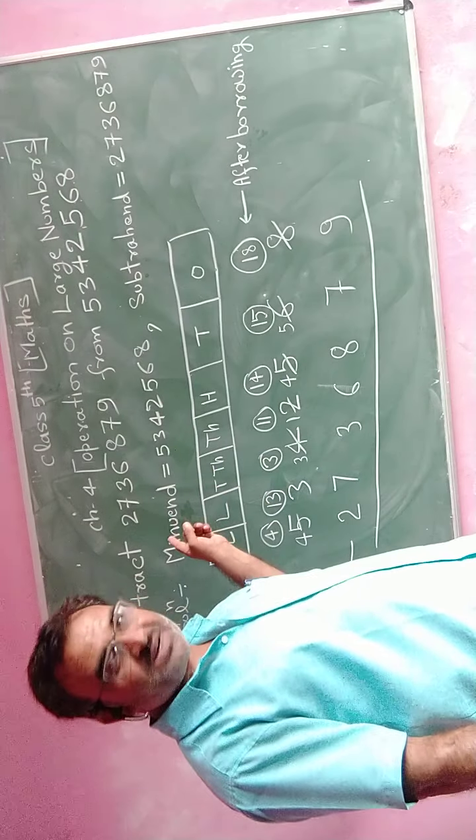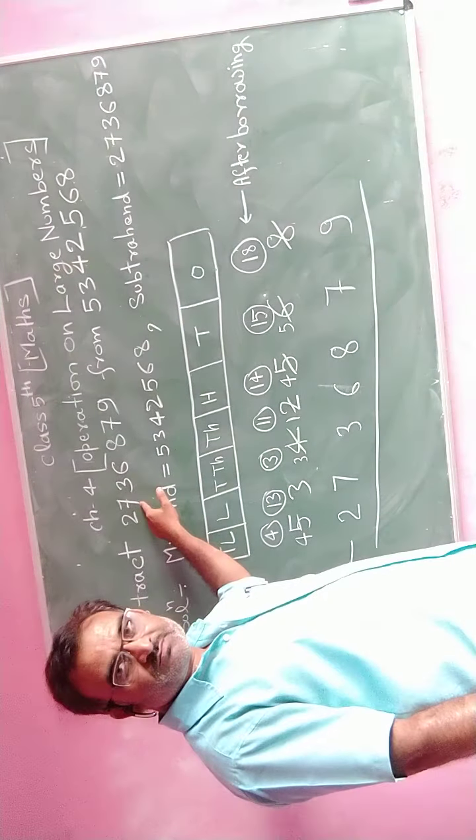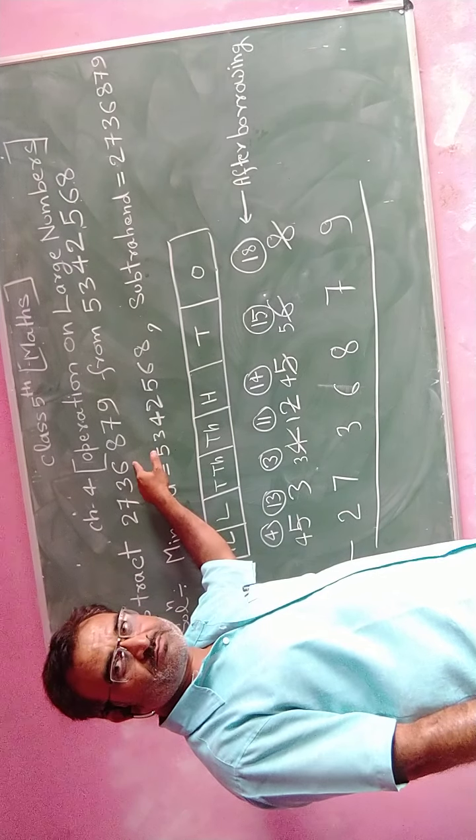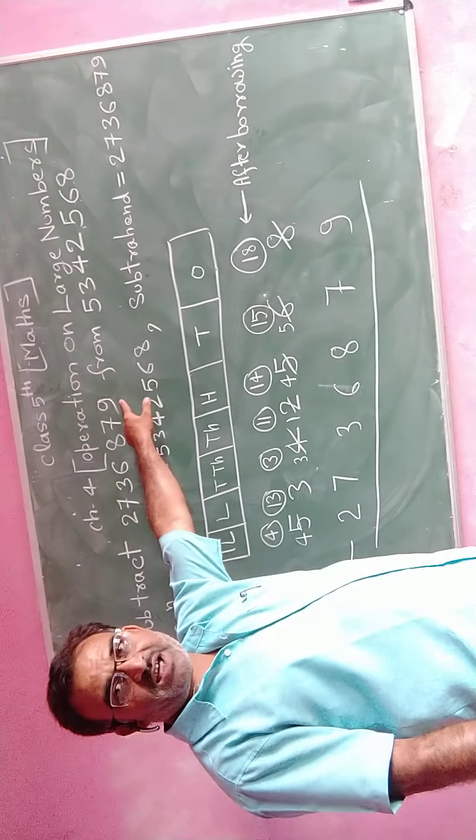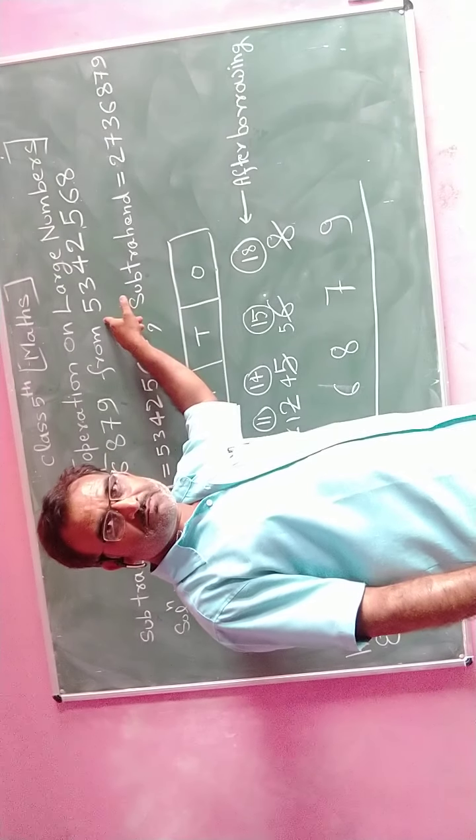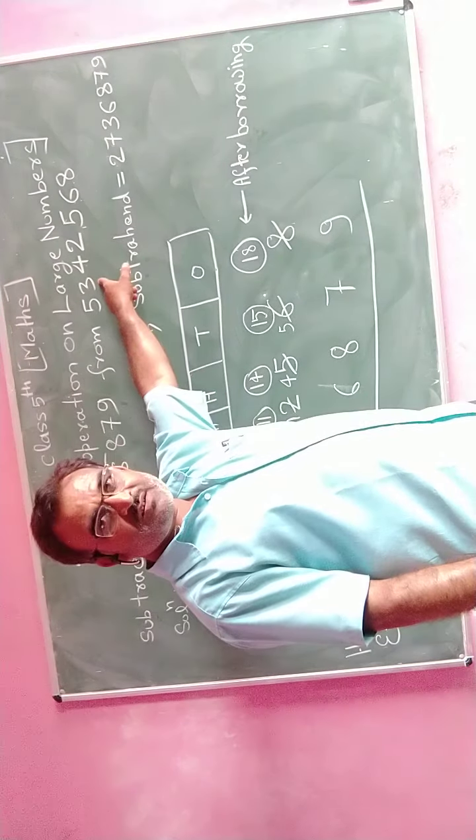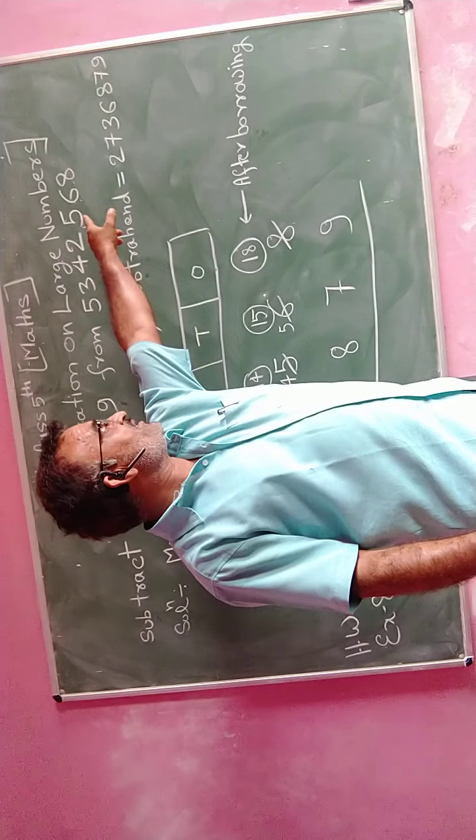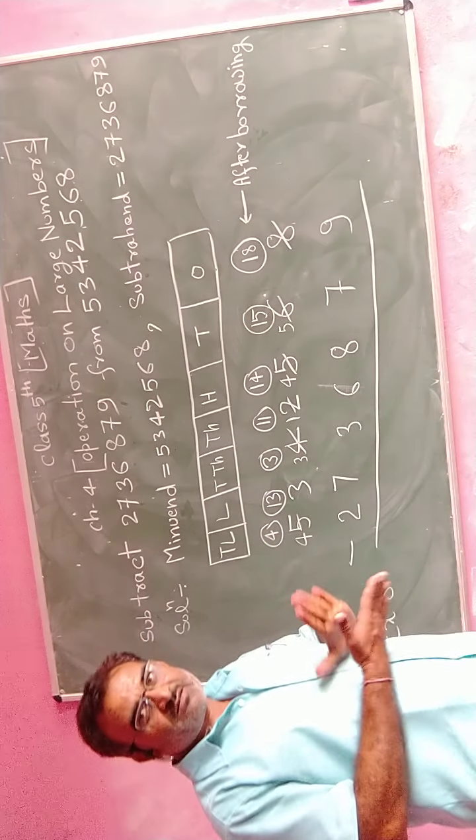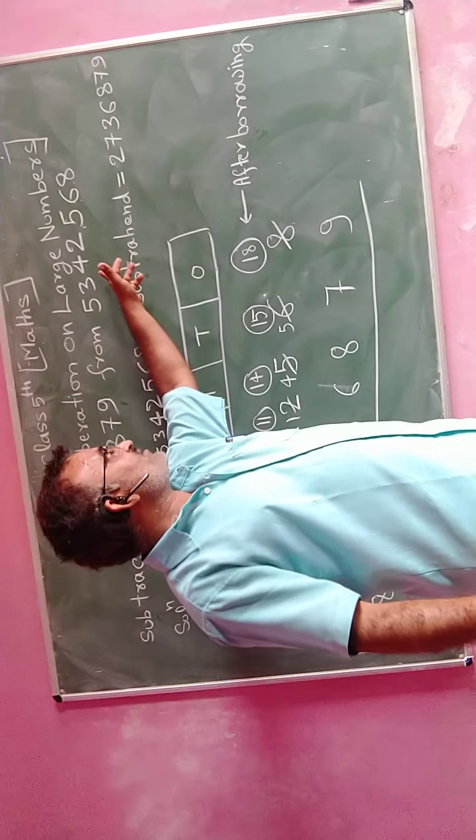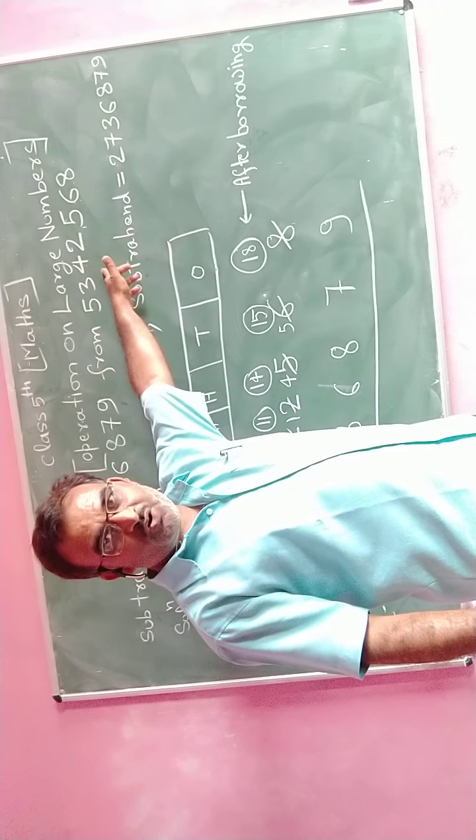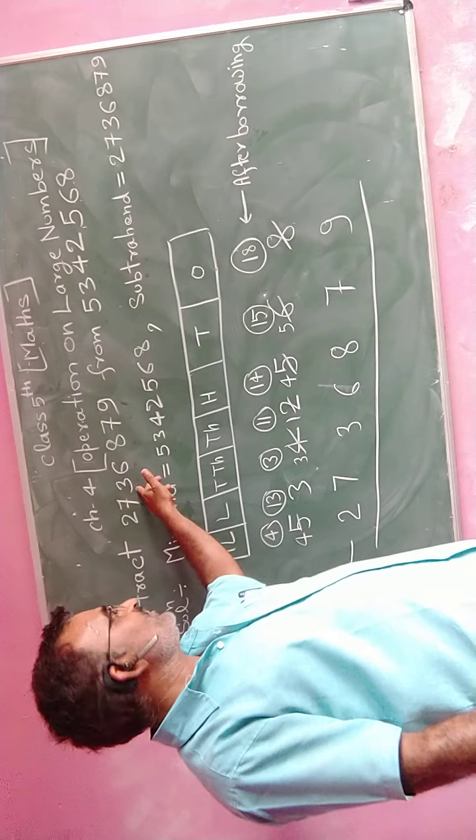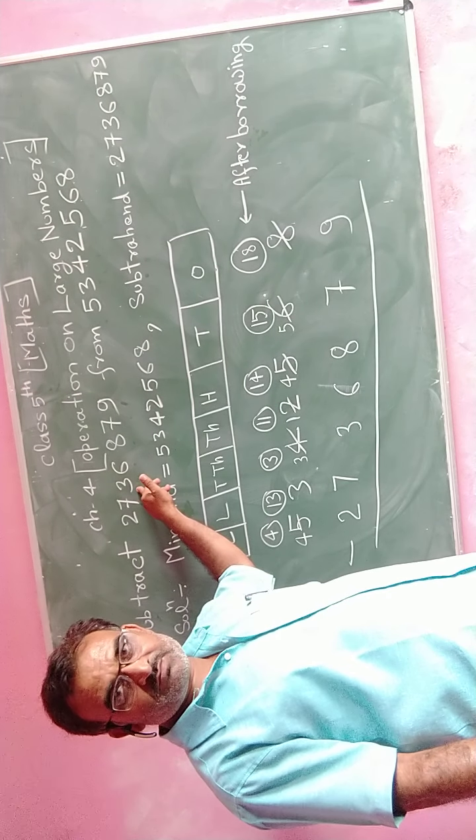I think there is a problem here. Subtract 2,736,879 from 3,542,568. Here the second number is the minuend. This is the minuend, and this number is the subtrahend.